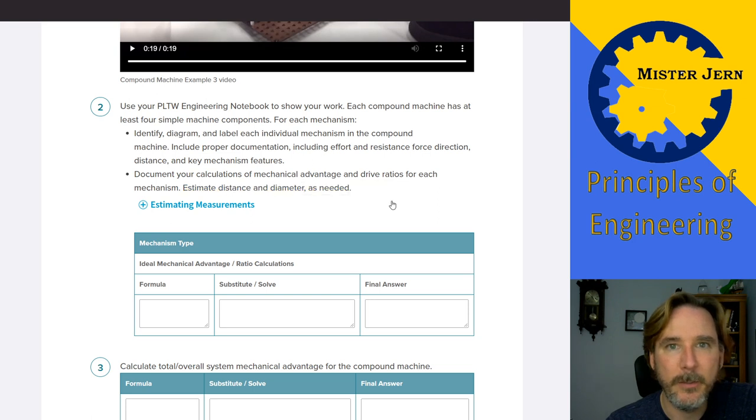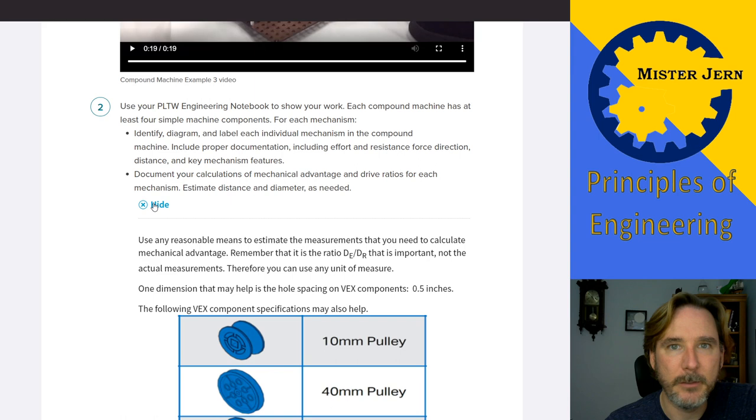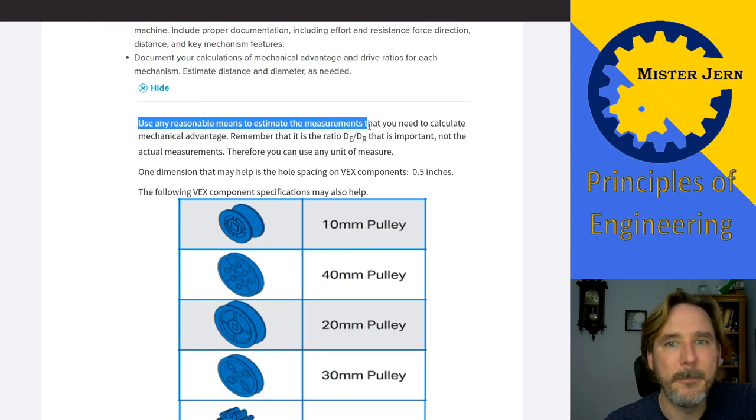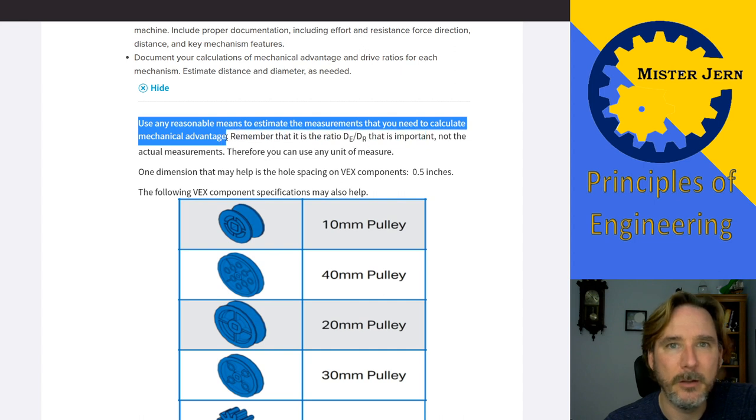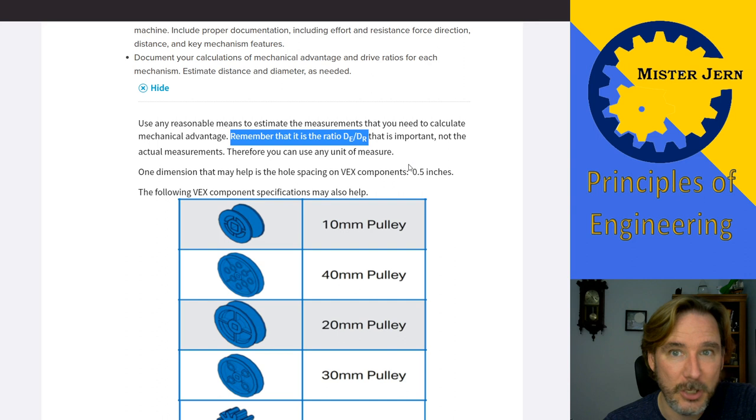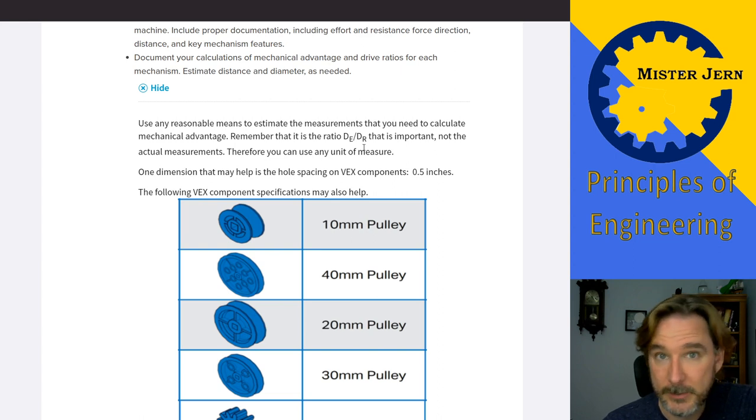but there's also some right here in this little drop down menu. Use any reasonable means to estimate the measurement that you need to calculate mechanical advantage. Okay, put a ruler up to the screen and whatever you need, whatever works for you. Just keep consistent because remember that it's the ratio that's important, the effort distance and the resistance distance.